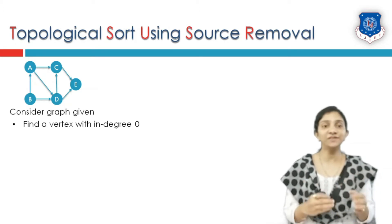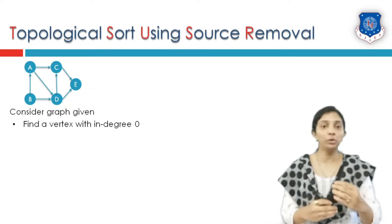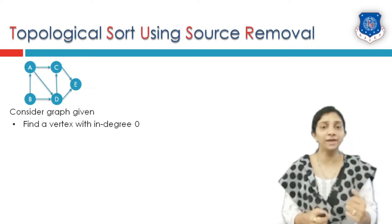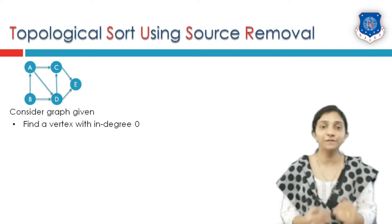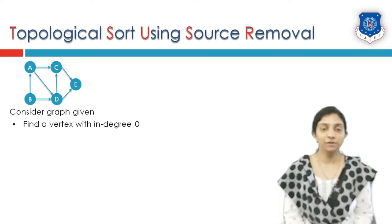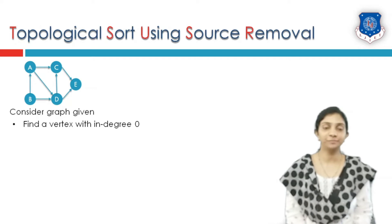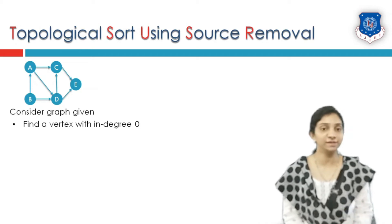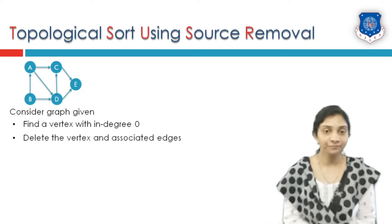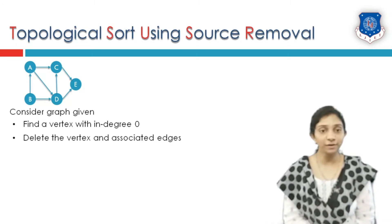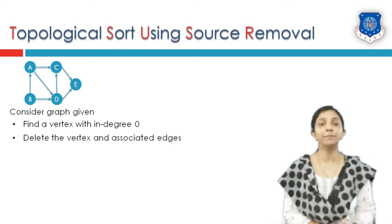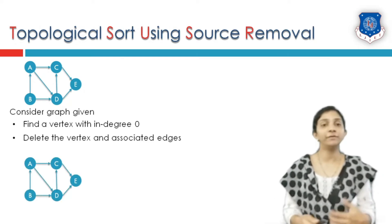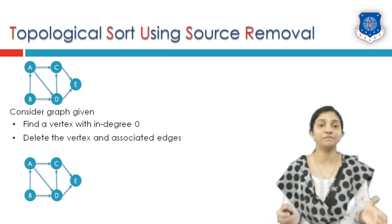Similarly, if a vertex is having outgoing or outward edges, that is called the out-degree. If a vertex is not having any outgoing edges, it has out-degree 0. But here we are only interested in in-degree 0 vertices. As soon as we find a vertex with no incoming edges, we have to delete that vertex from the graph along with its associated edges. We keep repeating this process unless and until the graph becomes empty.